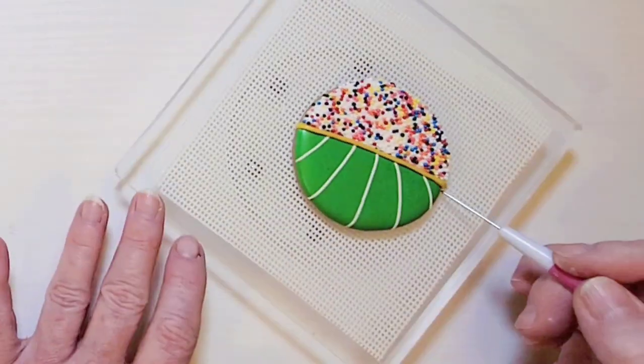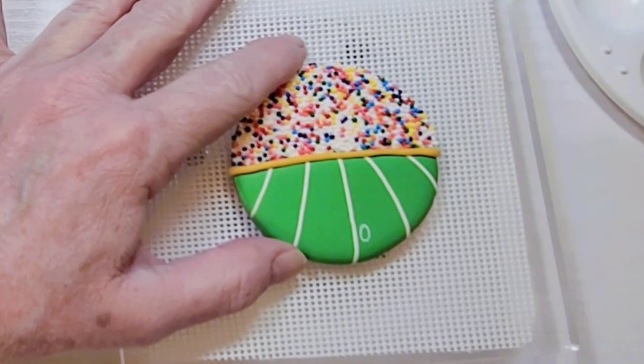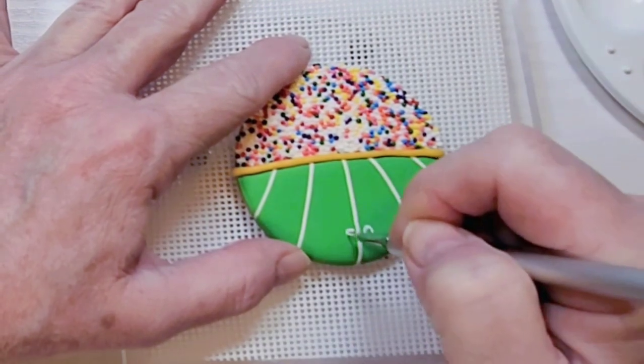Outline the divider between the crowd and the field. Put on the 50 yard line with some edible paint. And we're ready for the big game.